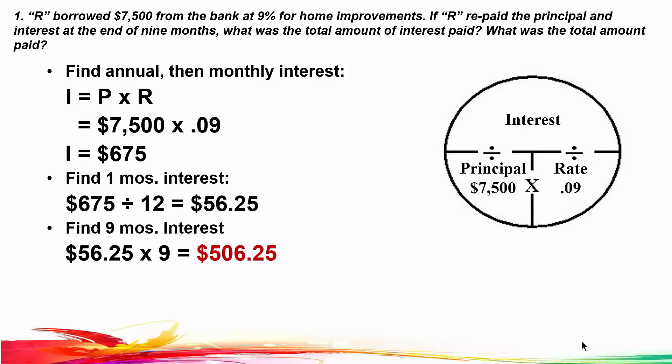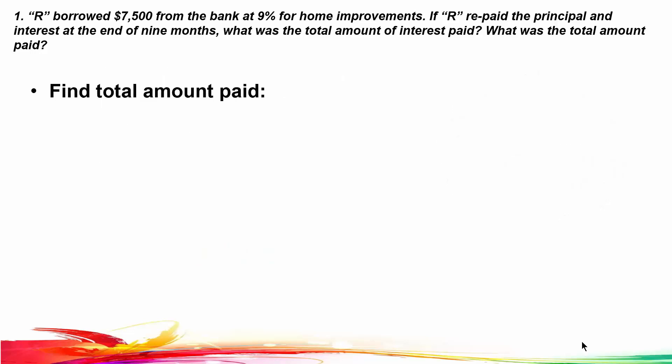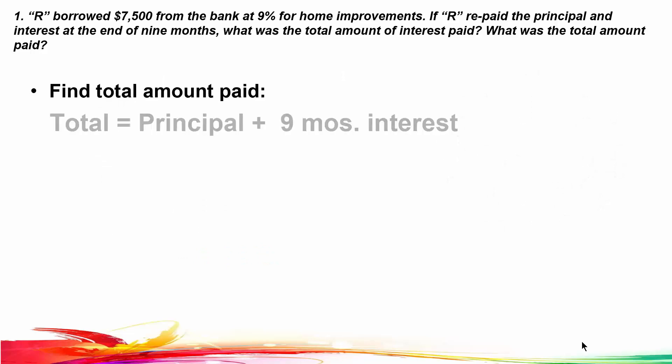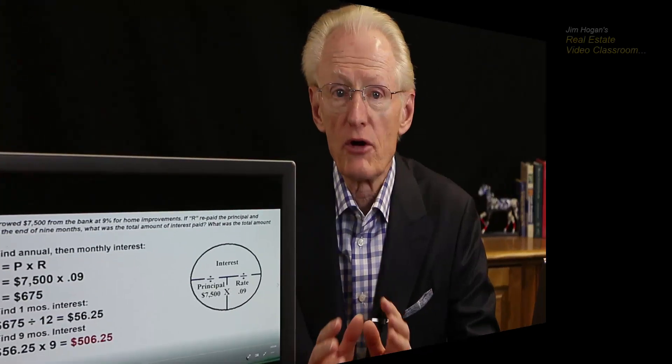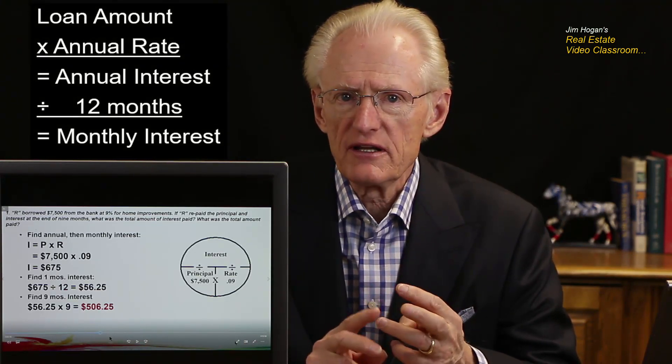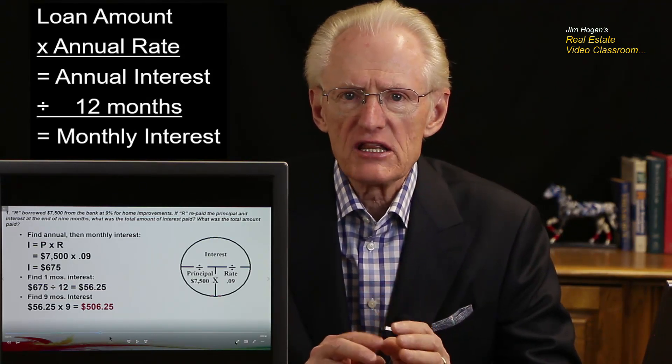If you are asked to find a certain number of months' interest, you always find the annual interest first, divide it by 12 months in a year to get one month's interest, and then multiply it by the number of months required. The nine months interest of $506.25 is the answer to the first part of the question. The second part asks for the total amount paid: that's the principal balance plus the nine months interest, so $7,500 plus $506.25 equals $8,006.25. Always take the loan amount times the annual interest rate to get the annual interest, then divide by 12 to get the monthly interest.